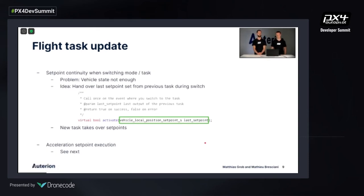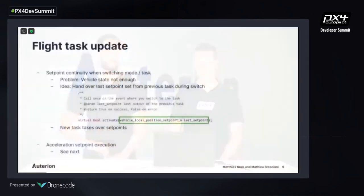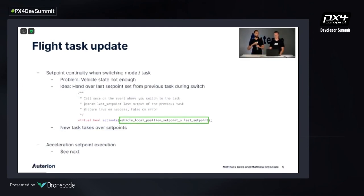Since I'm one of the authors of flight tasks and gave a talk at last year's Dev Summit, I want to give a quick update on the to-do items from last year. One to-do was to avoid discontinuities between mode switches or task switches, which occurred because the new task didn't know what the old task was doing and only had the current vehicle state — not enough to continue set points continuously. The solution is to capture the last set point executed by the previous task and pass it to the activate function of the new task, which then takes responsibility for a continuous takeover.